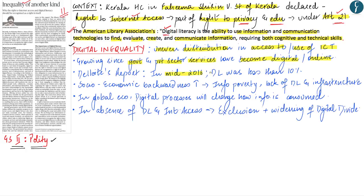This low figure paints a very bleak picture because on one hand only less than 10 percent of the people are digitally literate, while on the other hand various essential services by the government and private sector are now being provided online. This variability means that for 90 percent of India's population, availing most such services will be a herculean task. Furthermore, this digital inequality actually increases the already existing socioeconomic backwardness, because information poverty, lack of digital literacy, and lack of digital infrastructure are reasons why people are not able to access digital services.